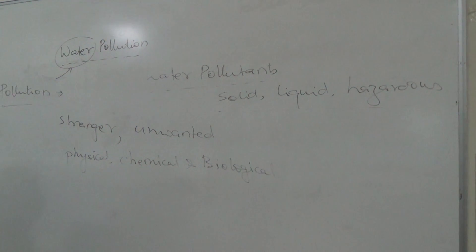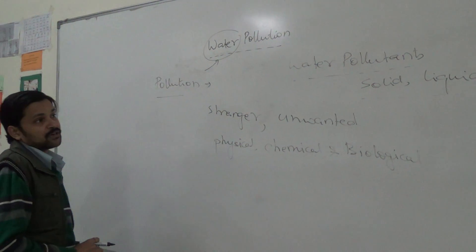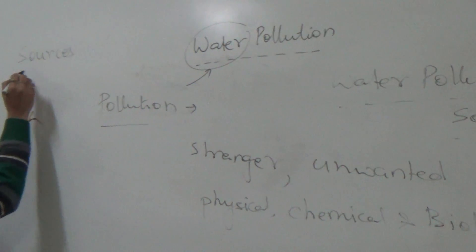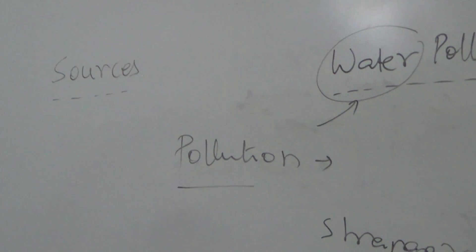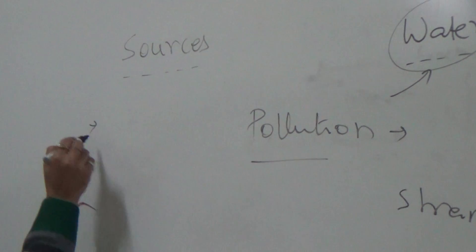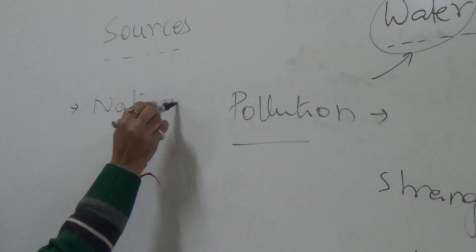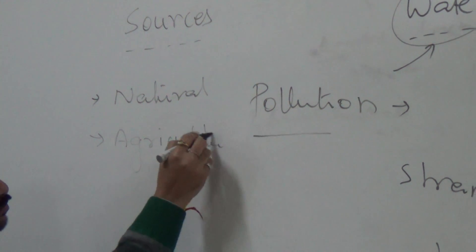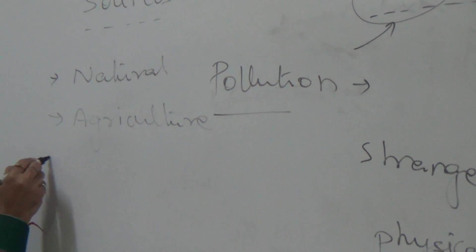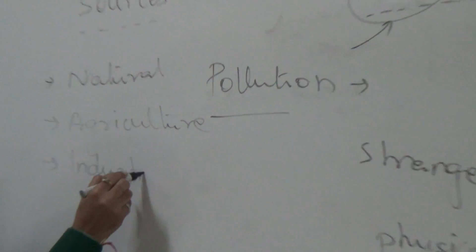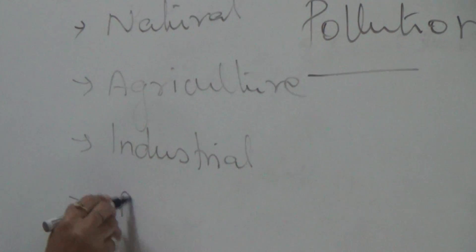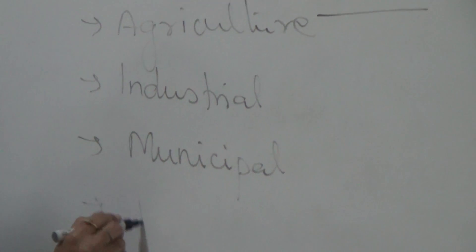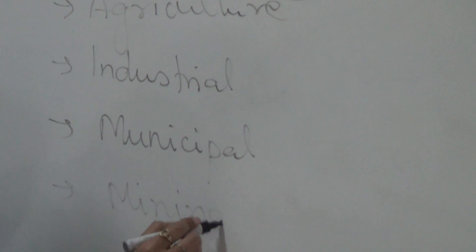Now we will focus on what are the sources of water pollution. There are various sources, such as natural sources, agricultural sources, industrial sources, municipal sources, mining, and others.